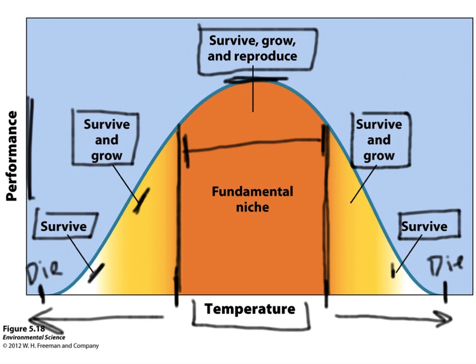This applies to any abiotic factor. A species is going to have a range of ideal conditions for humidity, salinity, pH, moisture — all of these types of things. This is called a species' fundamental niche. A species also has what's called a realized niche. A realized niche combines abiotic factors with biotic factors, because a species may be suited for a particular abiotic condition, but if competition is high or predation is high in that area, then maybe it's not able to live there. Biotic factors also determine a niche for a species.